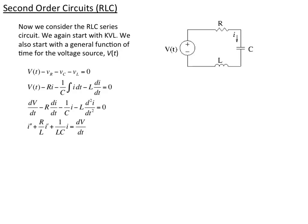So we begin. We're going to analyze the voltage going around the circuit using KVL — the mesh method with one loop. We go up through V, we lose voltage through R, we lose voltage through C, and we lose voltage through L, which are listed as three terms. We haven't substituted them in yet.